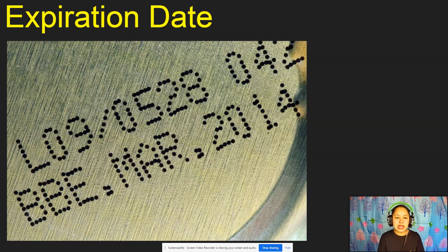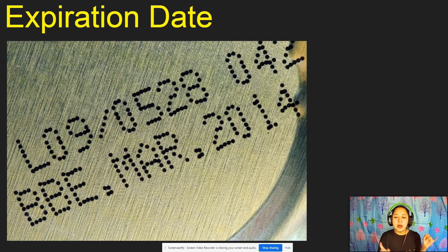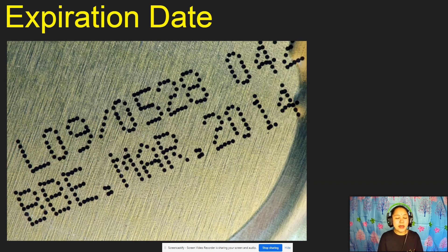Next is about expiration dates. When we have different things, they have expiration dates. Always take note of the expiration date of the things that we consume — for example, food, cleaning materials, and even medicine.